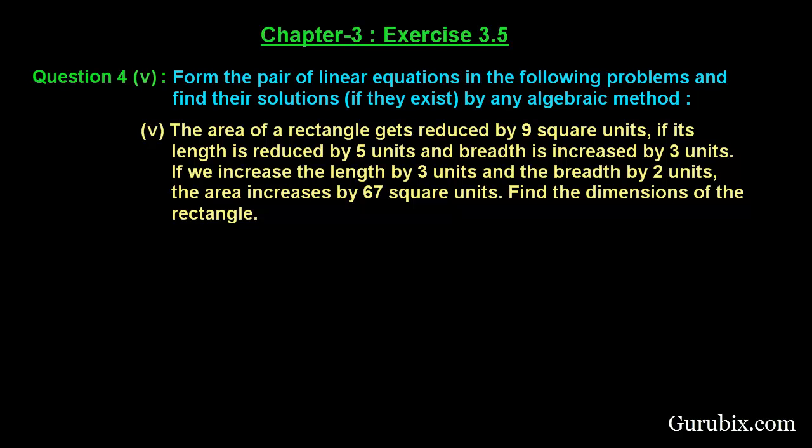Welcome friends. Let us solve the fifth part of question number 4 of exercise 3.5 of chapter 3. The question says: form the pair of linear equations in the following problem and find the solution if they exist by any algebraic method. The problem is: the area of a rectangle gets reduced by 9 square units if its length is reduced by 5 units and the breadth is increased by 3 units. In the second condition, if we increase the length by 3 units and the breadth by 2 units, then the area gets increased by 67 square units. Find the dimensions of the rectangle. This is a very important question from an examination point of view.